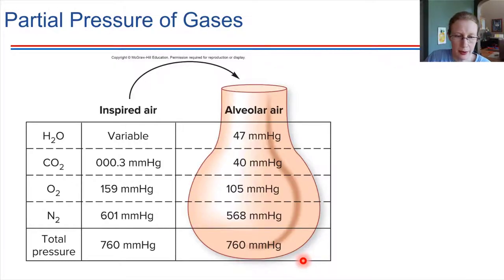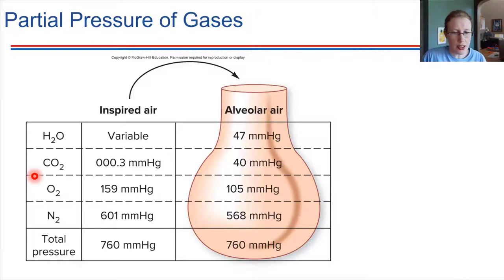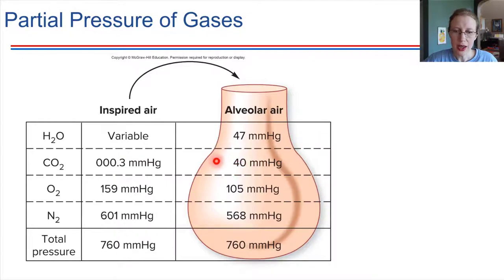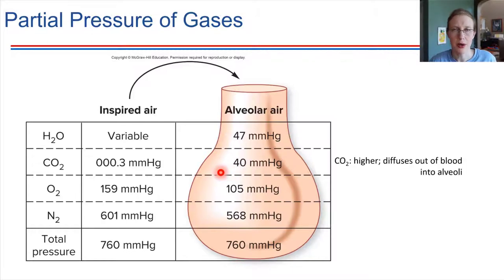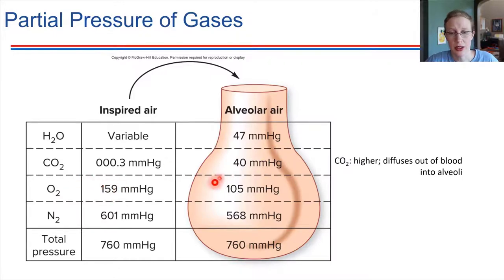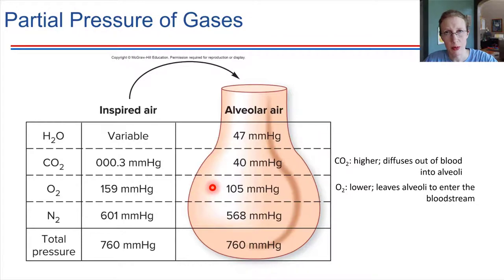We're going to compare air brought into the lungs with air down in the alveoli once gas exchange has had a chance to happen. When we breathe air in, focusing on oxygen and CO2 — carbon dioxide is kept in very low concentrations in the air around you. Once gas exchange takes place, carbon dioxide concentration in the alveolar air is much higher, because carbon dioxide is diffusing from our blood into the air in the alveoli. Oxygen is just the opposite — initially at a high concentration, and then once gas exchange happens, that concentration goes lower, because oxygen is leaving the air and traveling into the bloodstream.